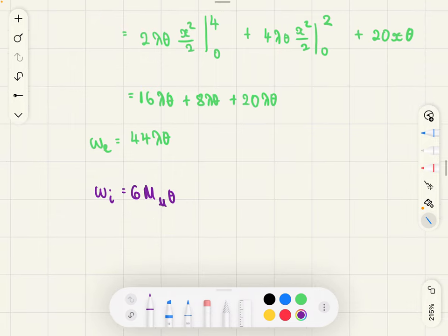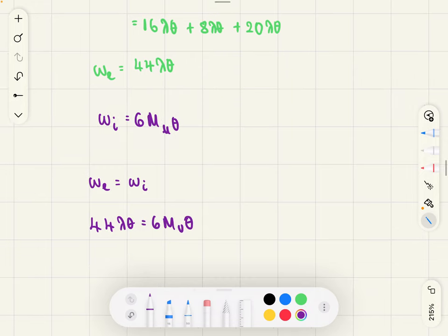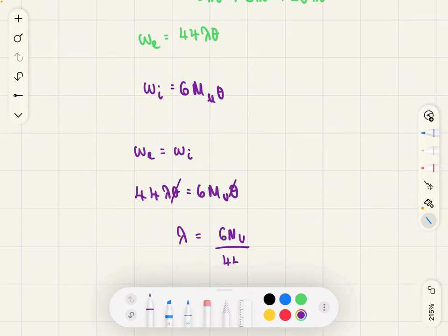Now we know that the external work is equal to the internal work because our structure is in equilibrium. And when we equate them, we get this. And we are going to rearrange in terms of λ, cancel out the θs. We are left with 6 mu over 44. So 3 mu over 22. This is our value for λ, which is what we are looking for.